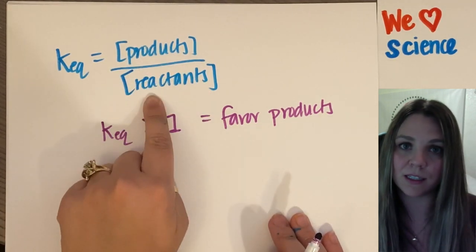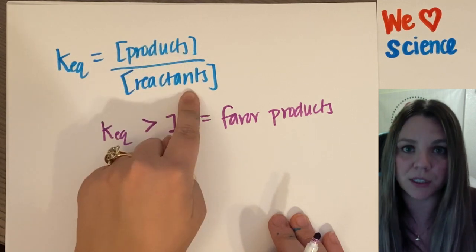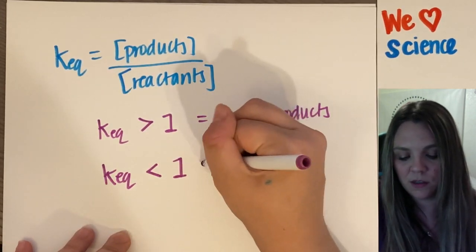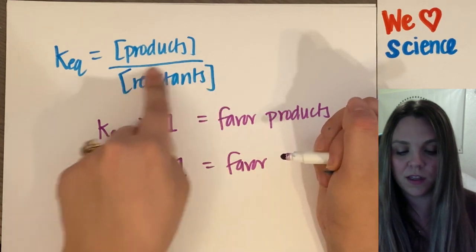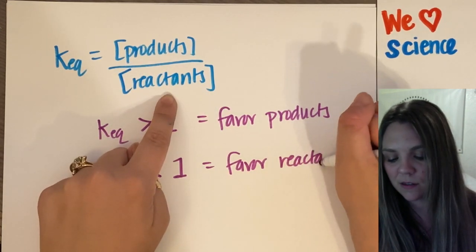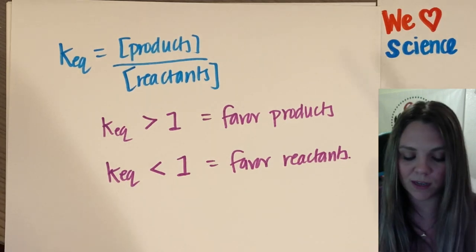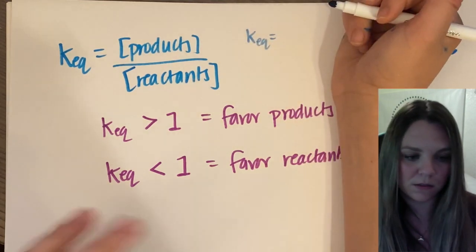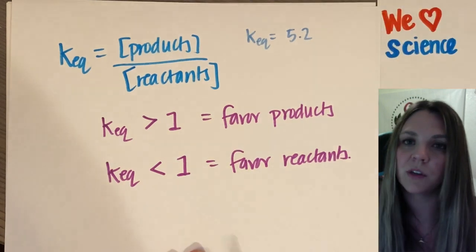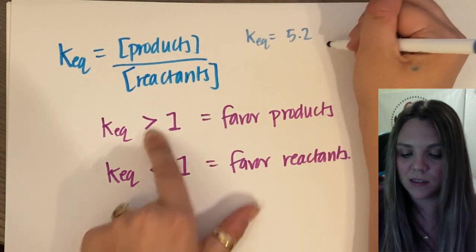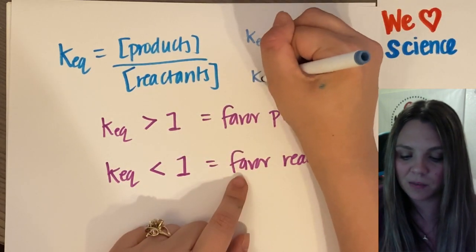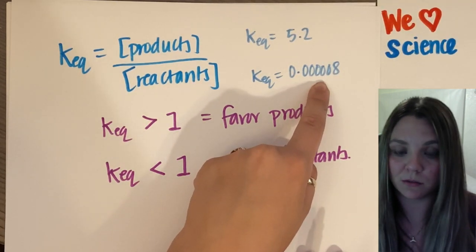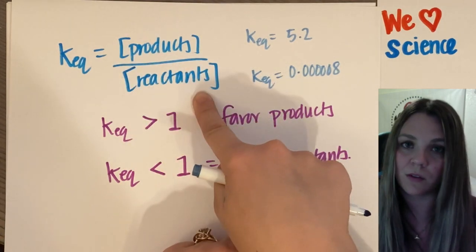If, however, the number on my denominator is bigger, right, if I have like one divided by a hundred, I have a bigger number on the bottom. My K of equilibrium is going to be less than one, which means it's going to favor the thing that's on the denominator. It's going to favor reactants. So you could tell right away if you were given an example problem that said your K of equilibrium was, whatever, 5.2, you know, aha, that's greater than one. This favors products. If I had my K of equilibrium is 0.00008, a number smaller than one, it's going to favor reactants.